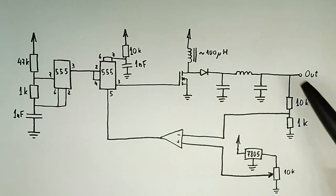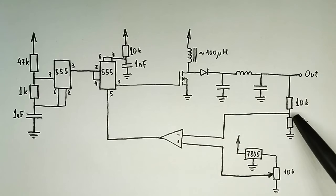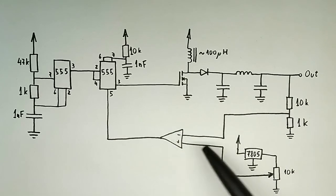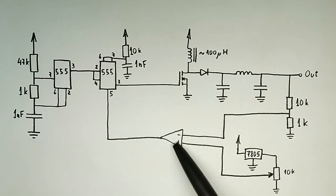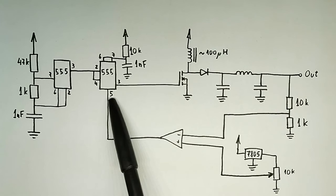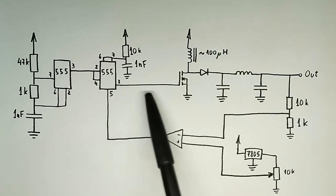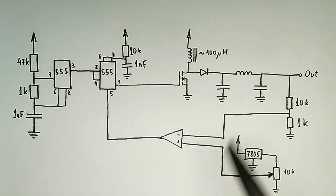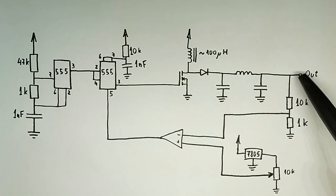Let's imagine that the output drops. This is going to feed a lower voltage to the inverting input compared to the non-inverting input, thus the output here will go high at pin 5 and increase the duty cycle. This will increase the output voltage, which corrects the previous error.